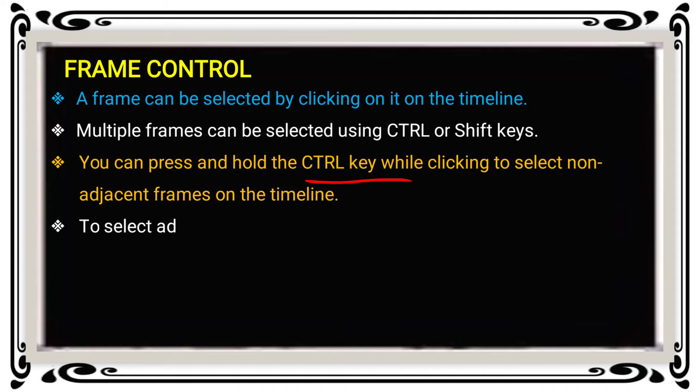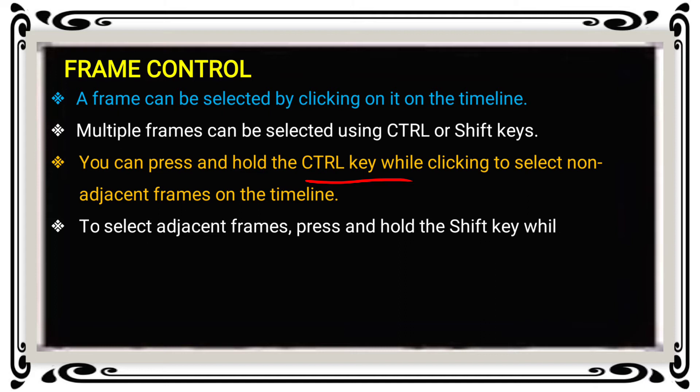To select adjacent frames, press and hold the Shift key while clicking the frames. Adjacent means continuous frames — the required continuous frames are selected by holding Shift and clicking the frames.